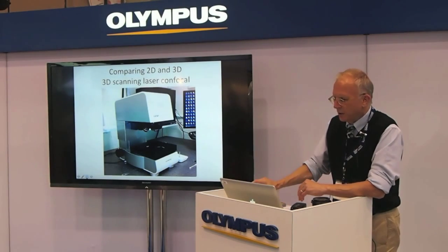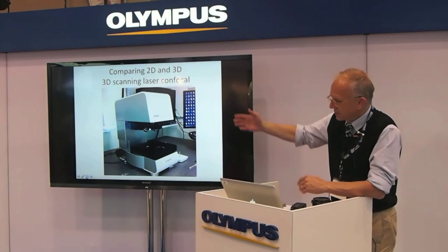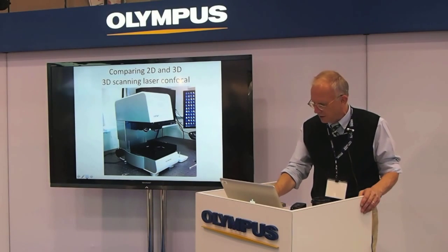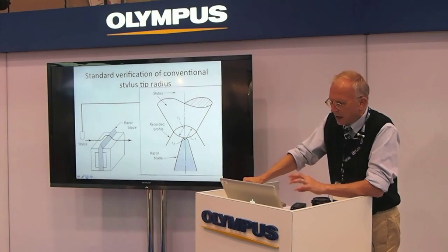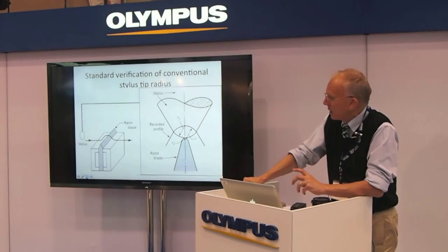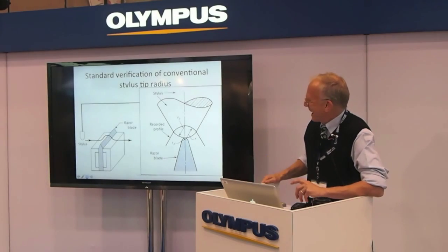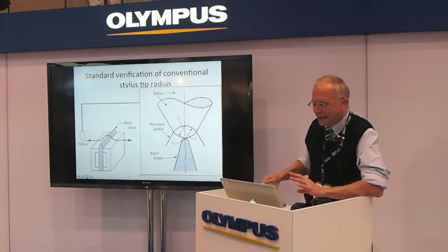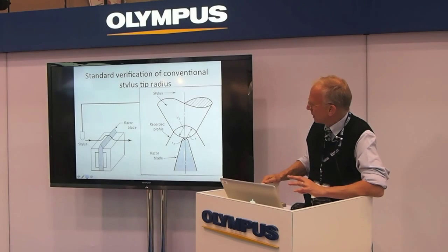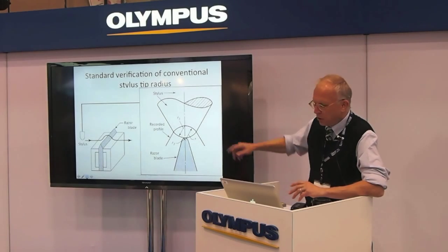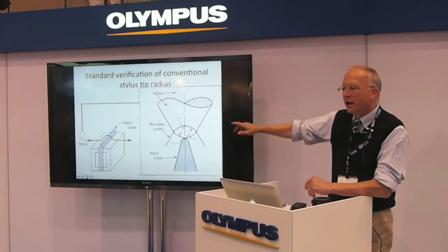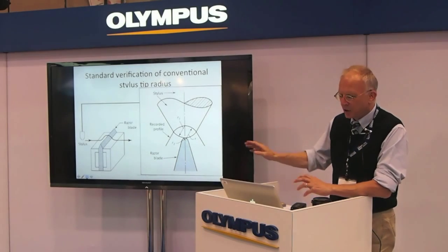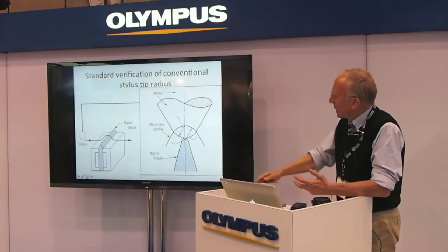Let's take a look at 2D versus 3D. Here is a 3D scanning laser confocal microscope. Here's what you saw in the diagram of the conventional stylus tip. When you're doing contact measurement, the shape of your tip is very important because that tells you what kind of features you can get into. If there's damage to the tip, your measurement won't be good.